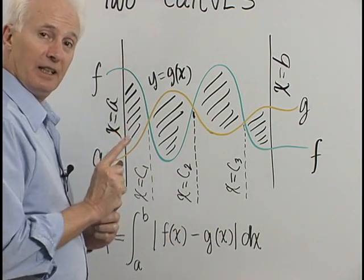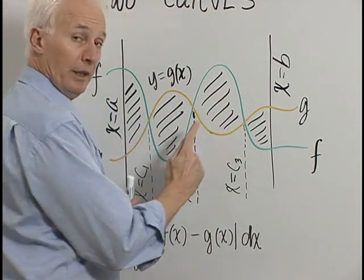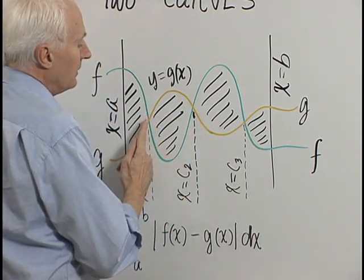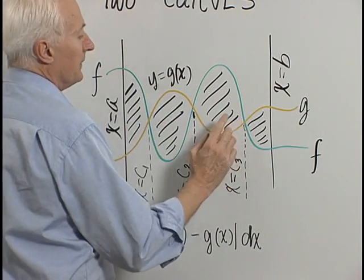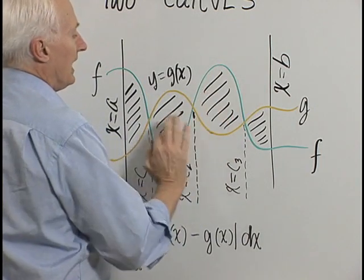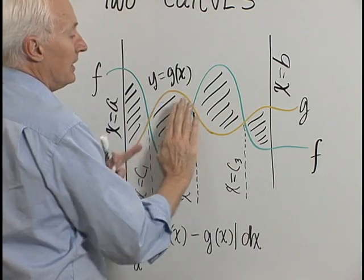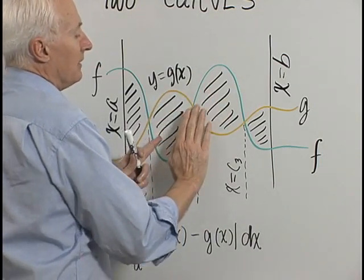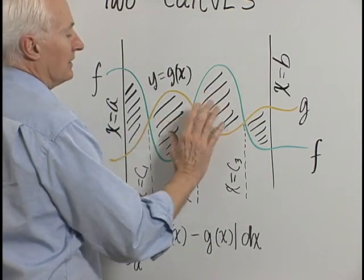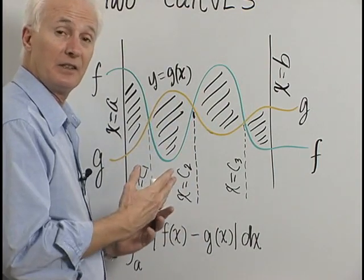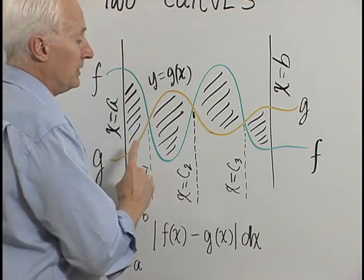Here's the catch: if I make one mistake and leave out one of those crossing points, then integrating over a combined interval causes positive and negative areas to cancel each other. It might come out slightly positive or slightly negative, and I'd miss a whole lot of area. So you really have to be careful when using this technique — find every crossing point.